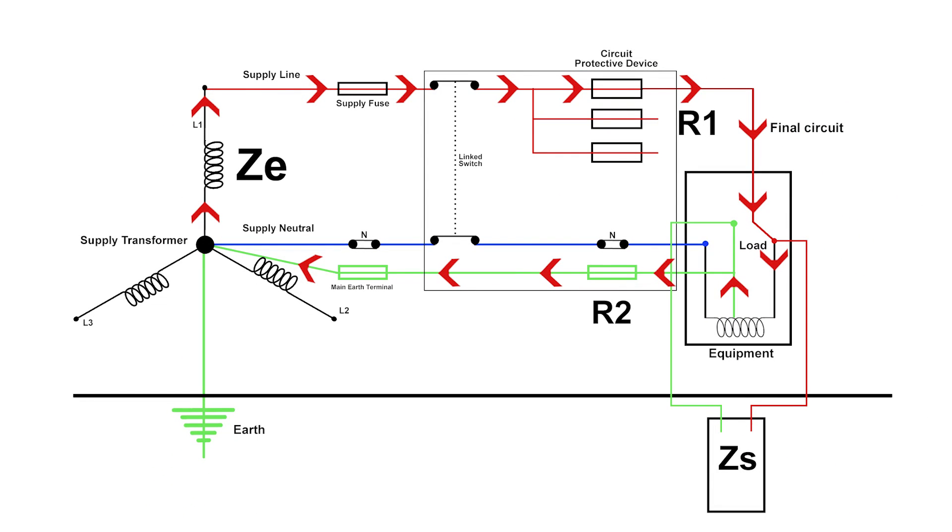The next component would be R1 and R2. R1 is the resistance of our line conductor. R2 is the resistance of our earth conductor. Ze plus R1 and R2 will add up for us to Zs. So that would be the complete system resistance through our earth, through the whole of the earthing system, back through the line conductor, back to our test instruments, which of course would be an earth fault loop impedance tester.